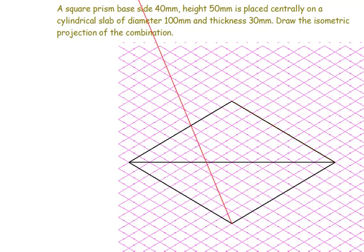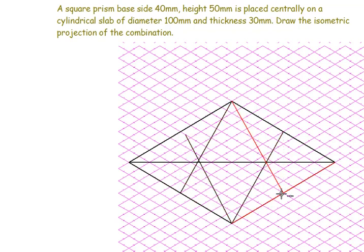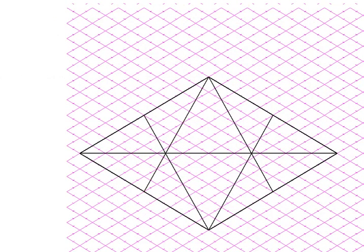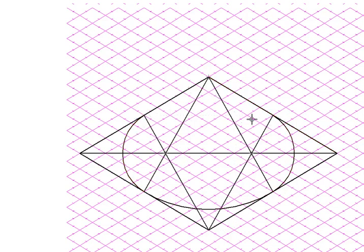The measurements are 50 on each side. I need to draw an arc — this is the center, and all these lines should be in thin lines; you can erase them later. This is the center and this is the radius. I'm going to draw an arc. I'm not going to draw the bottom arc yet because it is the base circle of this cylinder.